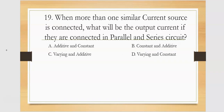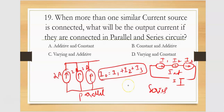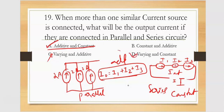When more than one similar current source is connected, what will happen in the output when connected in series and parallel? When similar current sources are connected in parallel they add up; when connected in series the current remains constant. That is the fundamental rule. So in parallel they add, in series constant — therefore option A is the right answer and the rest are wrong.